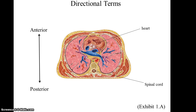The next set of directional terms is anterior versus posterior. Anterior being toward what we think of as the front of the body, and posterior being toward the back. So in this image, you see that the heart is anterior to the spinal cord.